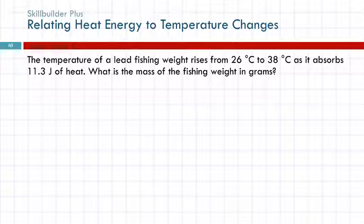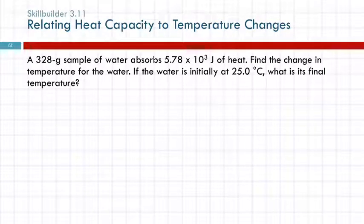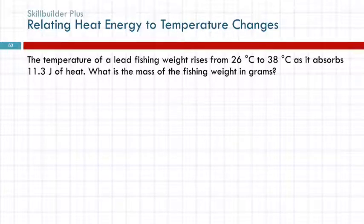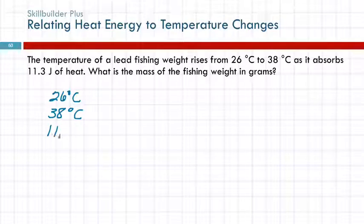Here's another problem. The temperature of a lead fishing weight rises from 26 degrees Celsius to 38 degrees Celsius as it absorbs 11.3 joules of heat. What is the mass of the fishing weight in grams? So let's take the numbers and write them down: 26 degrees Celsius, 38 degrees Celsius, and 11.3 joules.